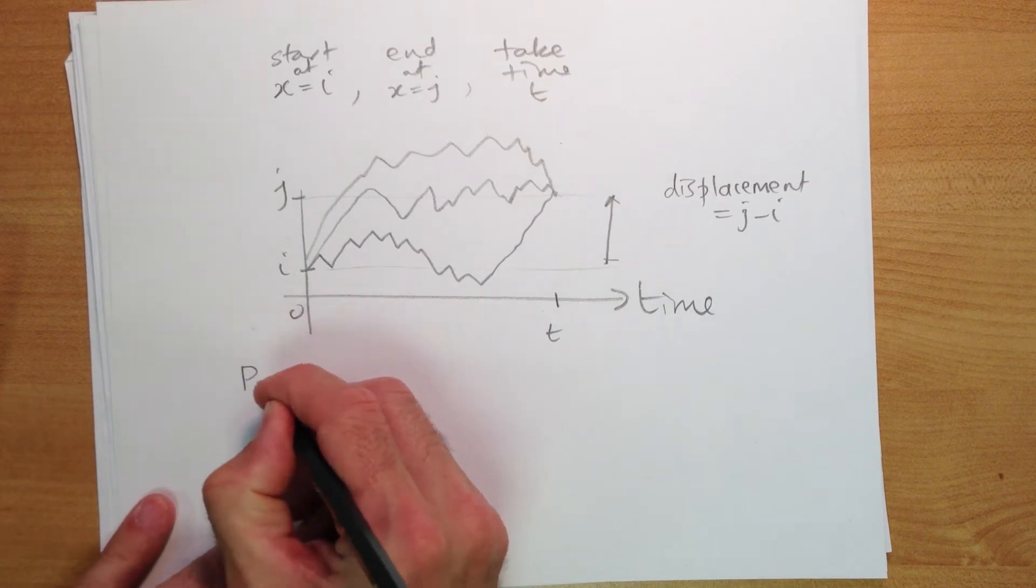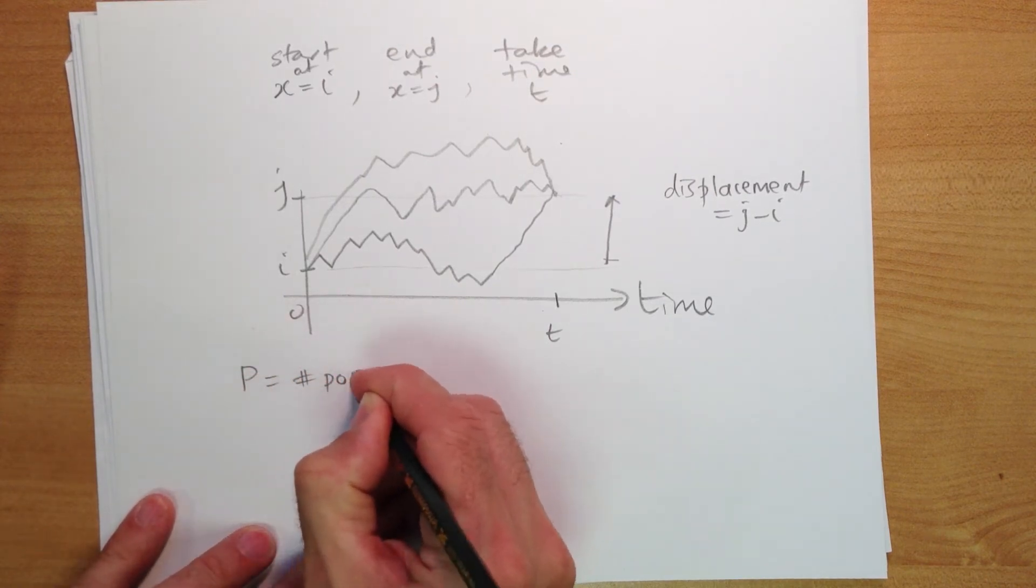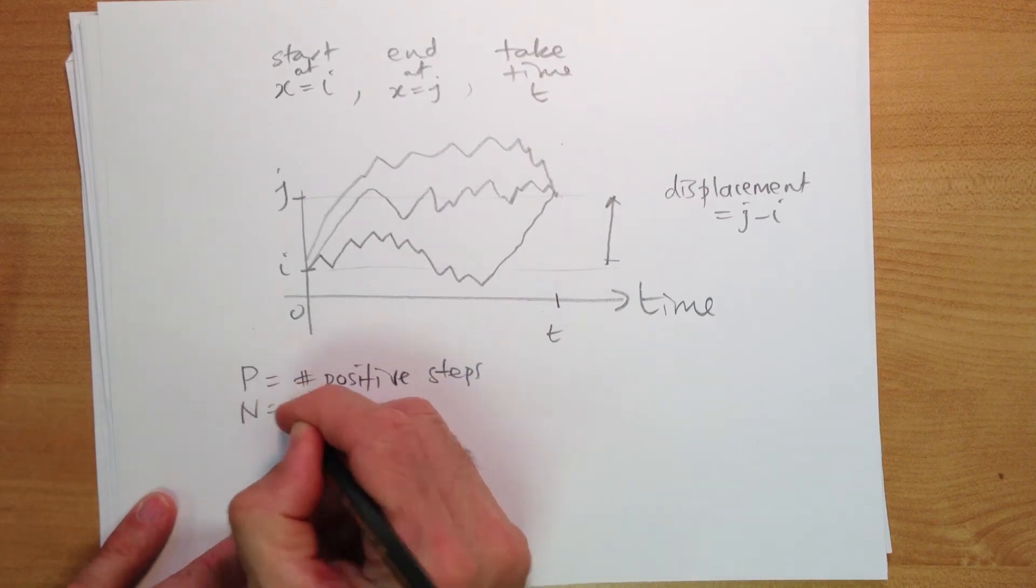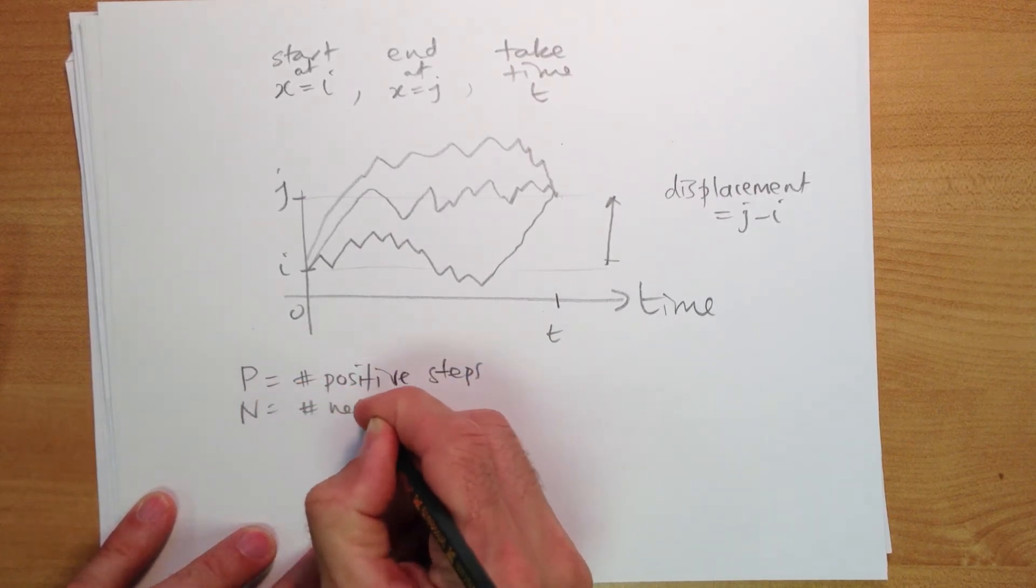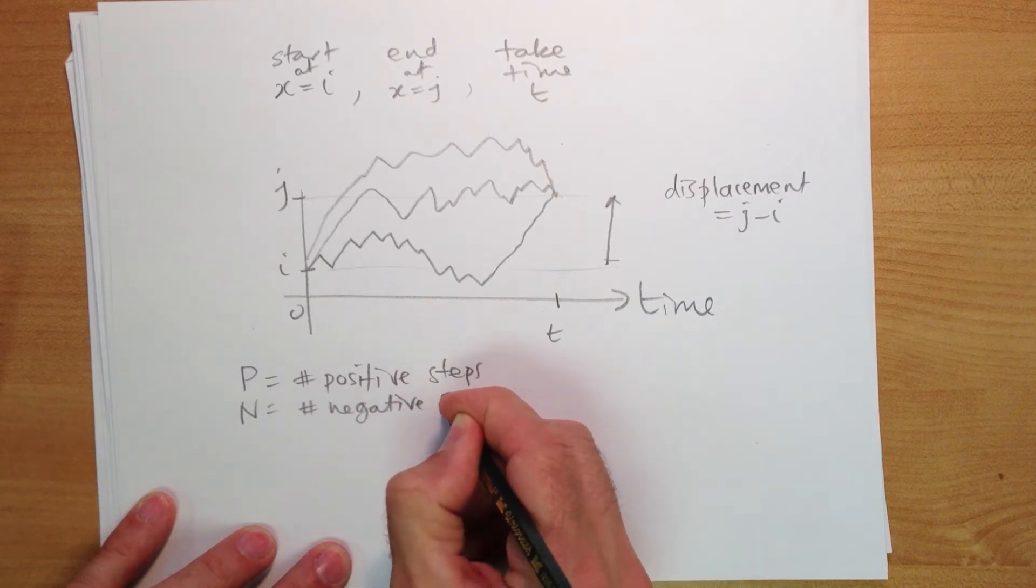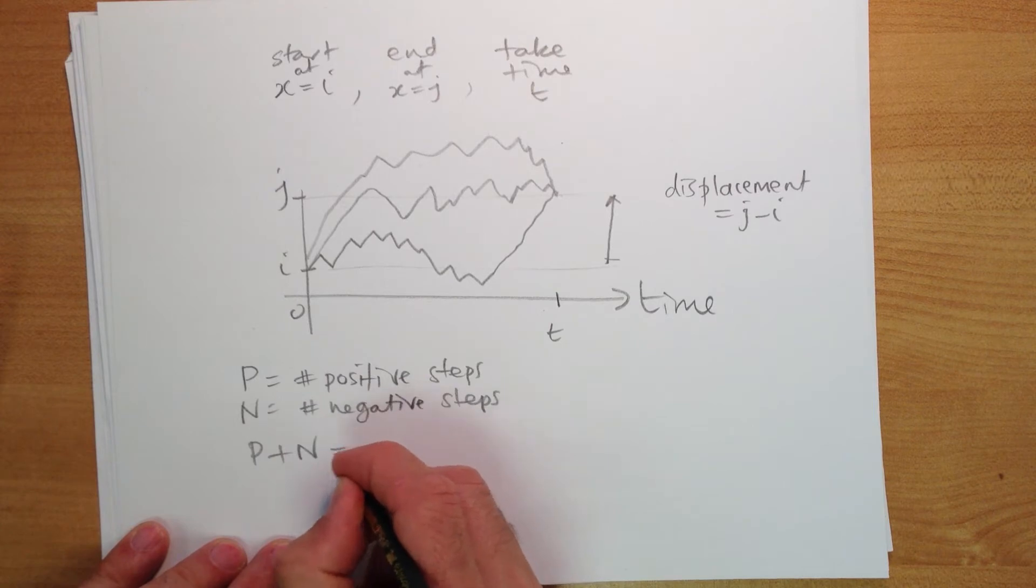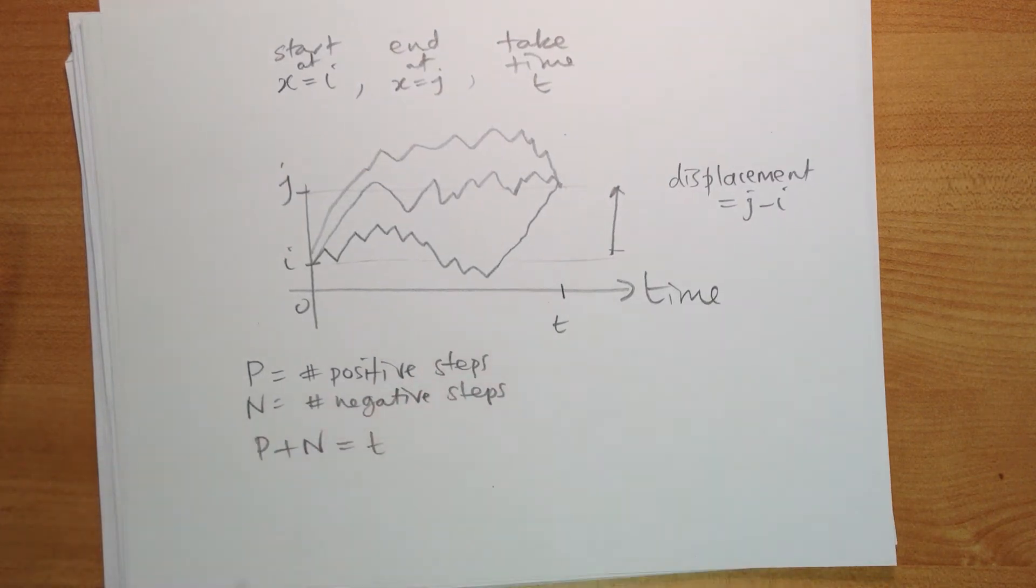Let's call P equal to the number of positive steps, and N equal to the number of negative steps. Then we have P plus N has to equal t, that's the total number of steps.